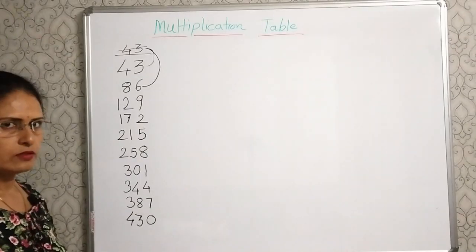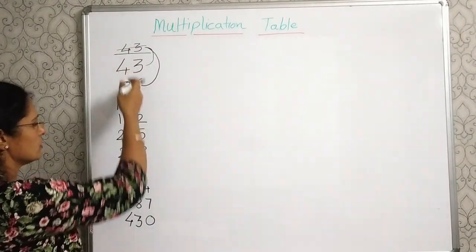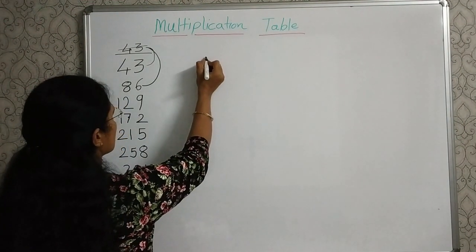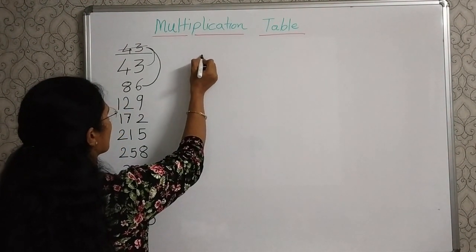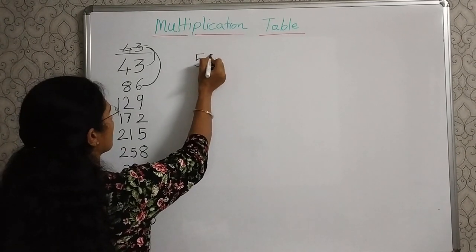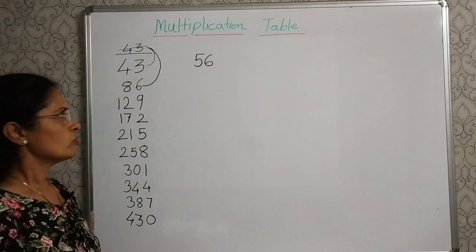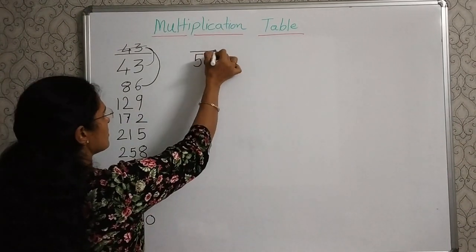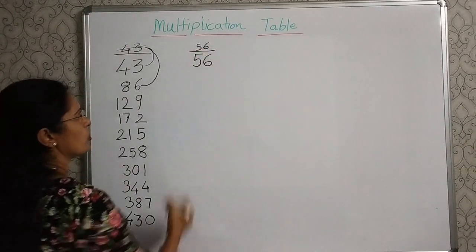Now, we will take another example. This is odd number. We will take one even number. Say 56. Now, to write the table of 56, we will write the same 56 on top.